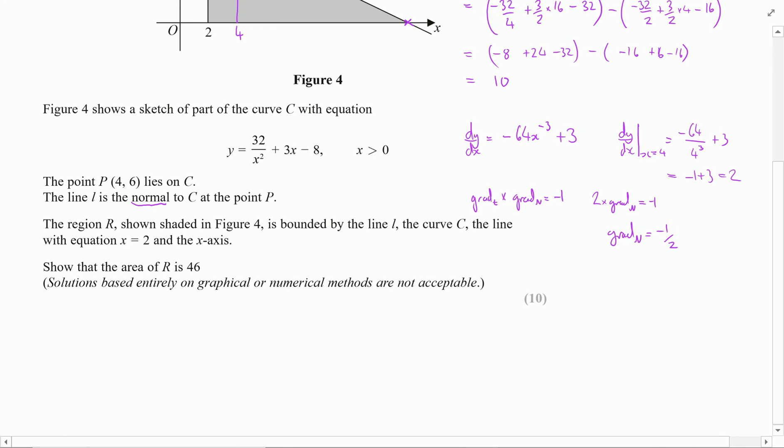Now I can go on and find the equation of that line. So L is going to be y minus 6 equals minus 1 half lots of x minus 4. I could choose to expand this, but I'm really not going to.